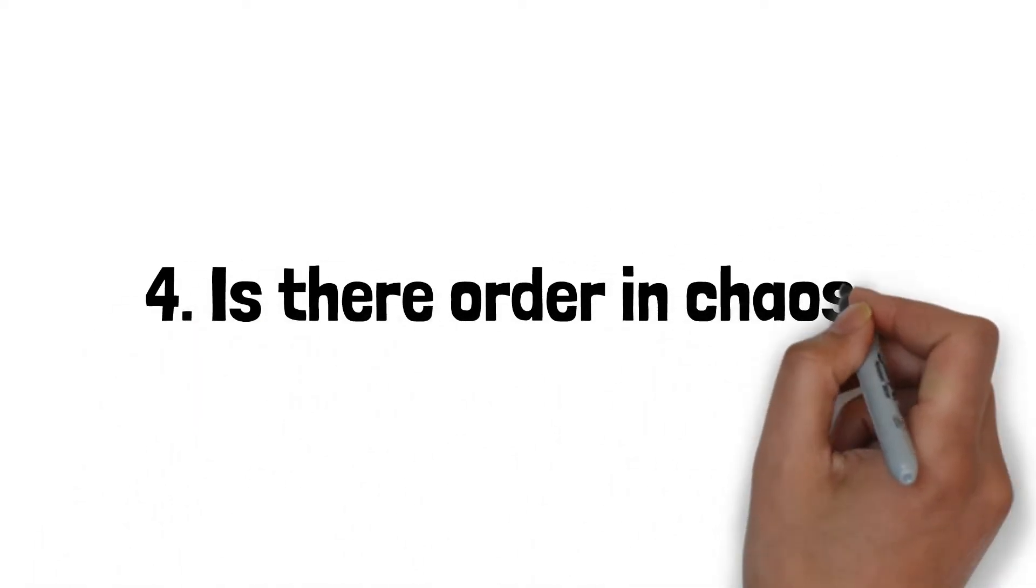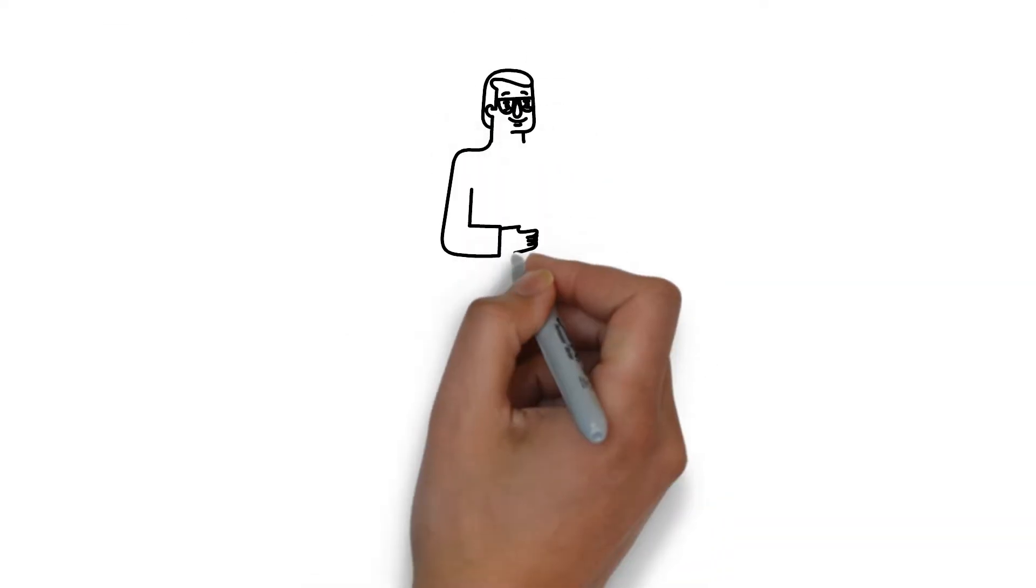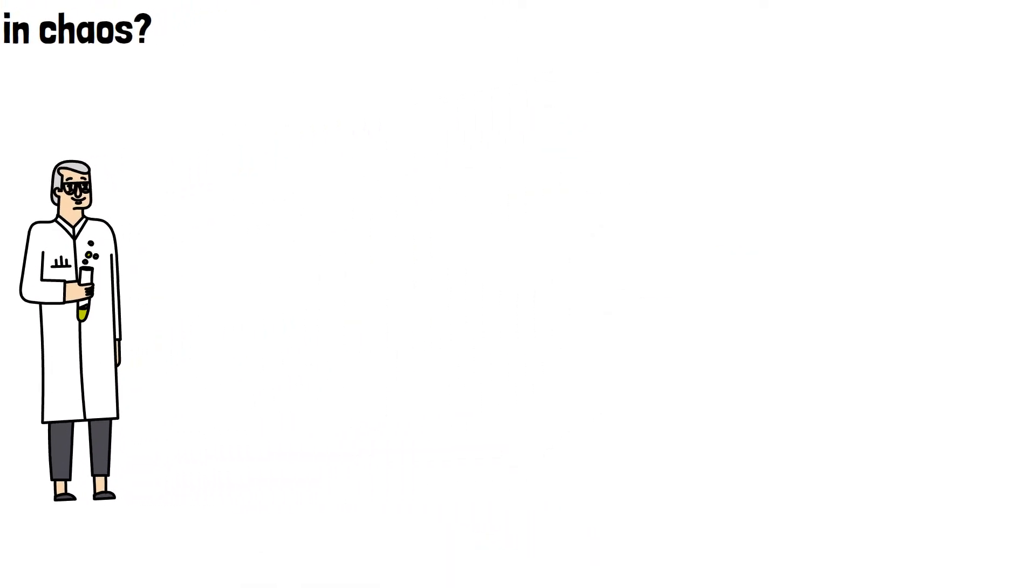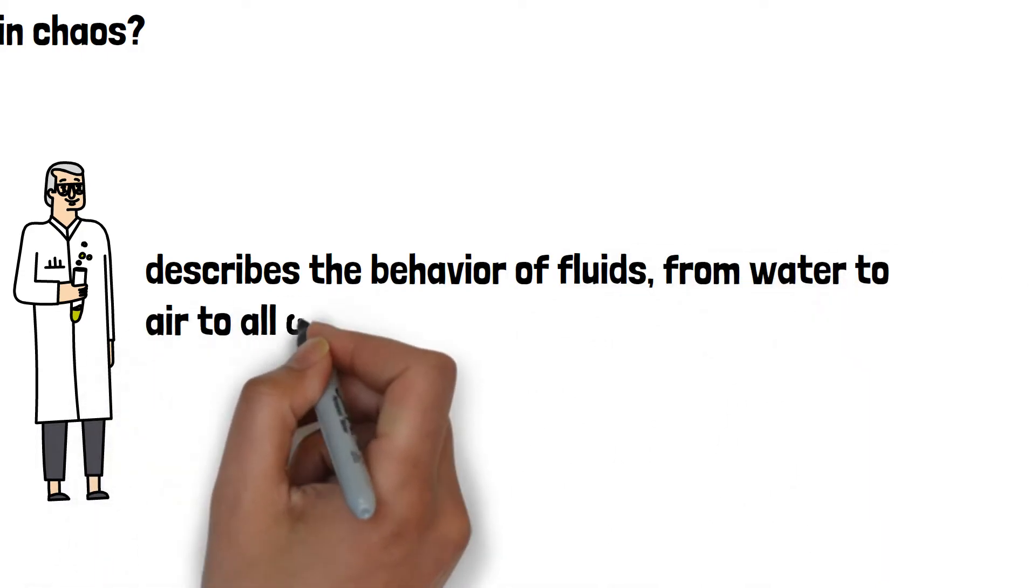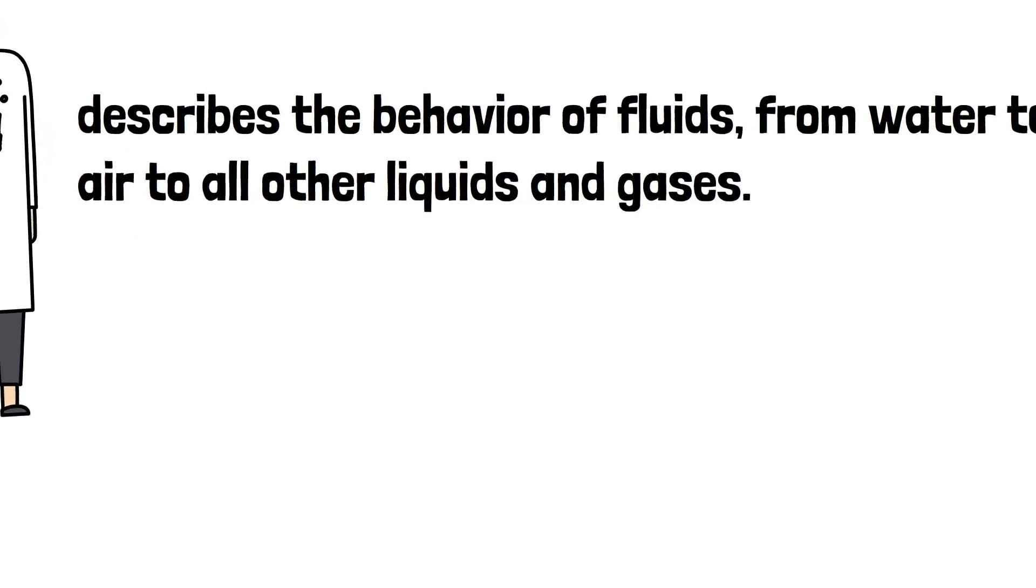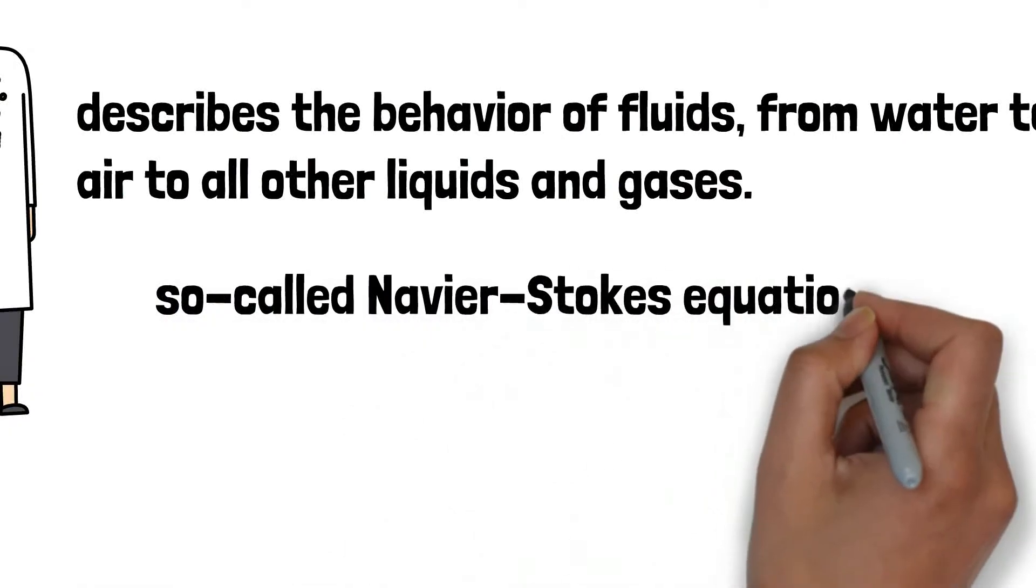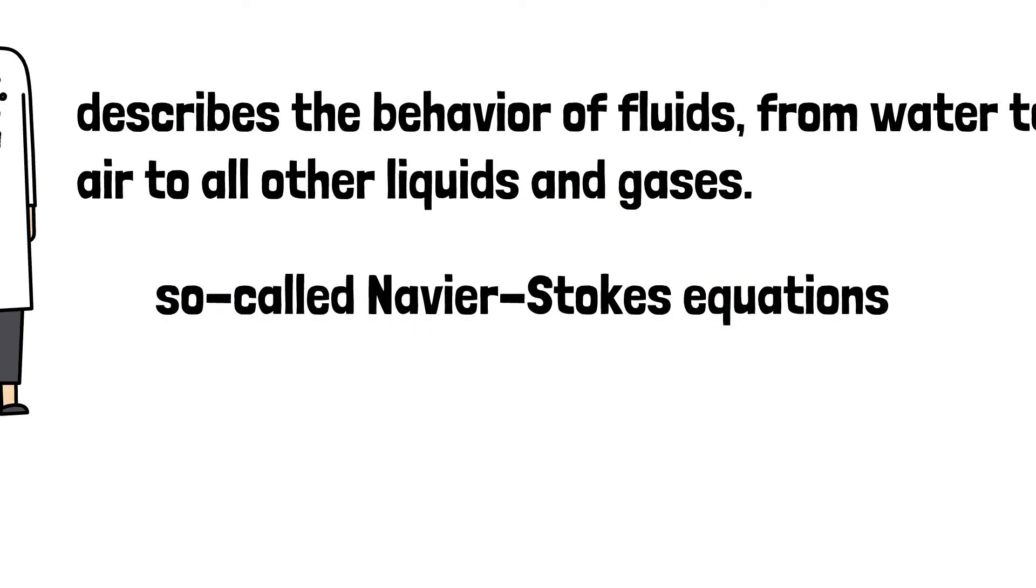Number 4. Is there order in chaos? Physicists can't exactly solve the set of equations that describes the behavior of fluids, from water to air to all other liquids and gases. It isn't known whether a general solution of the so-called Navier-Stokes equations even exists, or, if there is a solution, whether it describes fluids everywhere, or contains inherently unknowable points called singularities. As a consequence, the nature of chaos is not well understood.